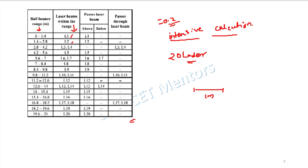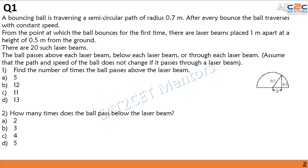After satisfying these conditions for all 20 iterations, I count: L1 and subsequent beams give 12 instances where the ball passes above the laser beam, and only 2 instances where it passes below. Hence, the answer for sub-question 1 is 12 (option B) and the answer for sub-question 2 is 2 (option A).